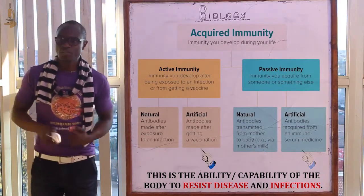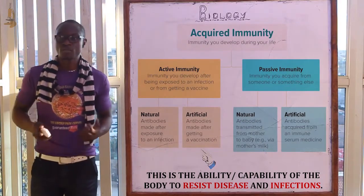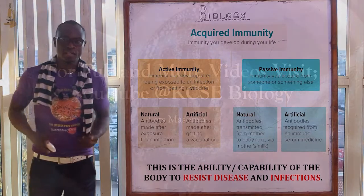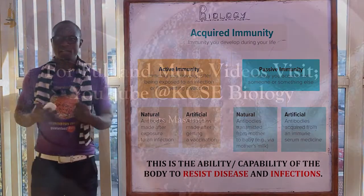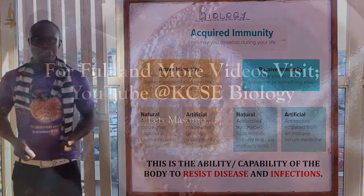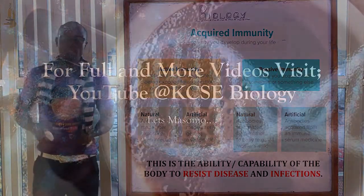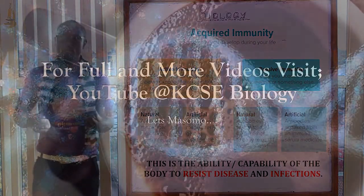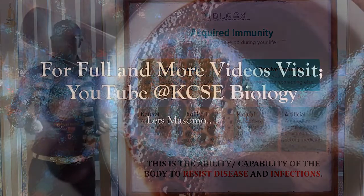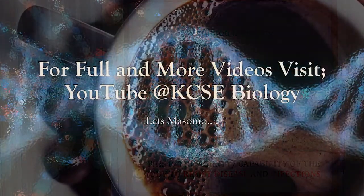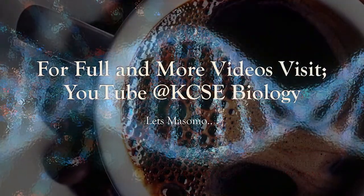Natural immunity is also called innate or inherited immunity. Artificial immunity is also called acquired immunity, since one can obtain it through injections from different vaccines.